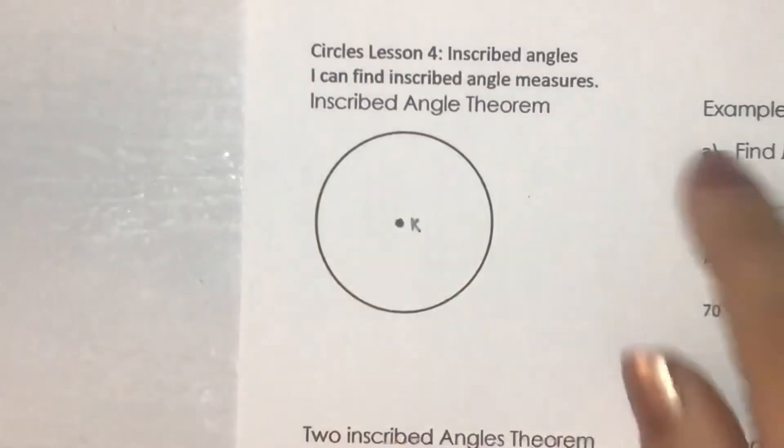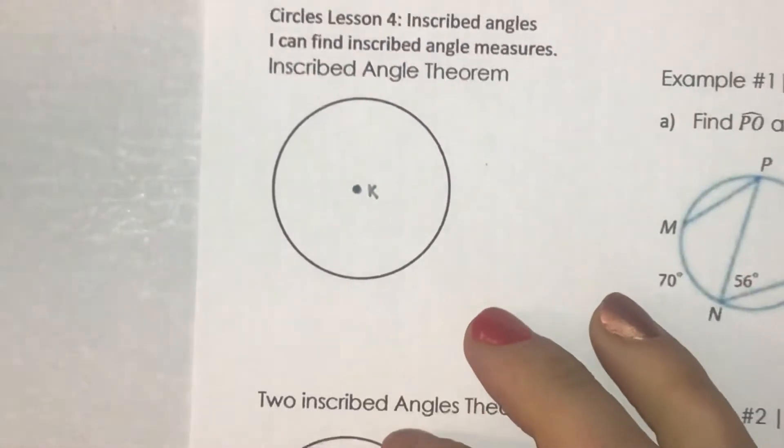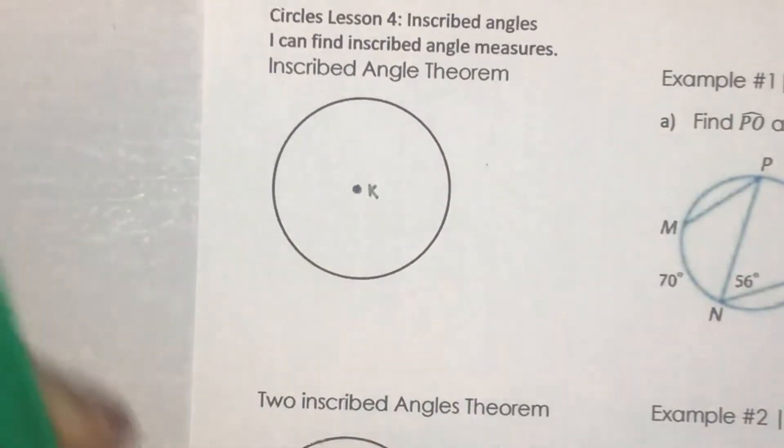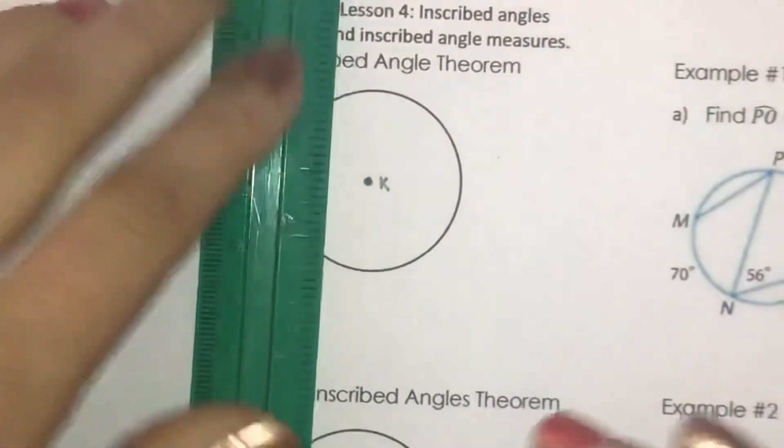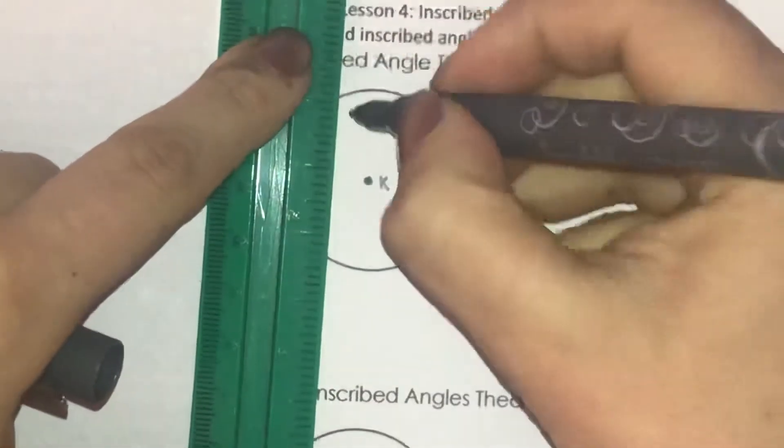We're going to learn about inscribed angles and their relationship with their arc measures. An inscribed angle versus a central angle is when an angle doesn't pass through the center point on the vertex.